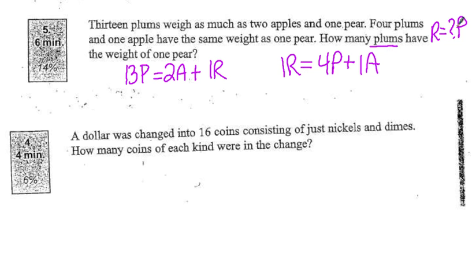Well, right now I've got an equation with a bunch of different variables. I notice here that 1r is equal to this. Well in this equation I've got 1r, so I can take this 1r and replace it with what 1r equals, which is 4p and 1a. So now I have an equation of 13p equals 2a plus 4p plus 1a.